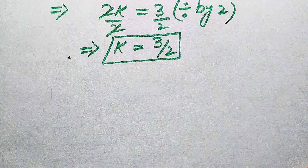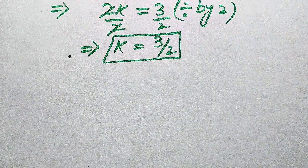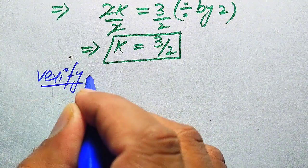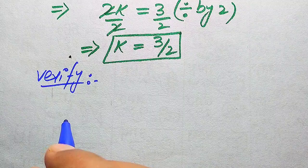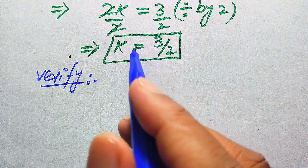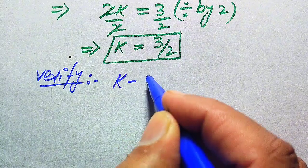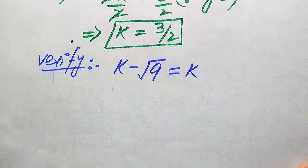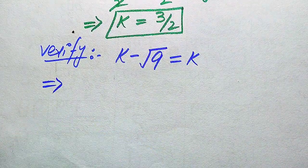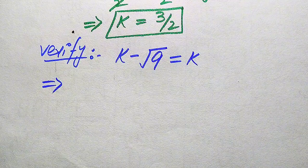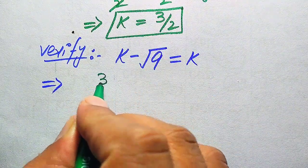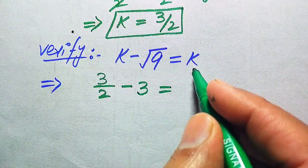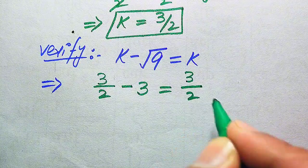Now we need to verify whether k equals 3/2 satisfies the given equation or is an extraneous root. We copy the original equation: k minus square root of 9 equals k. Substituting k = 3/2 on both sides, the left-hand side becomes 3/2 minus square root of 9, and we know square root of 9 equals 3, so it is 3/2 minus 3. The right-hand side is k = 3/2.